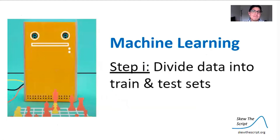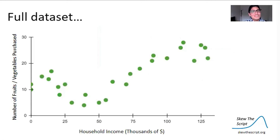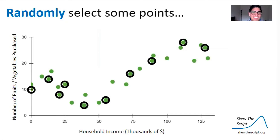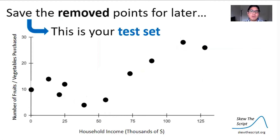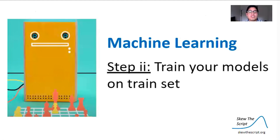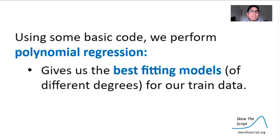The first step of machine learning is to divide our data into a train set and a test set. We take our full dataset and randomly select some points to remove. The remaining data is our train set, and the removed points are our test set. Step two is to train our model using the train set. Using some basic code, we perform what's called polynomial regression, which gives us the best-fitting model of different degrees for our train dataset.